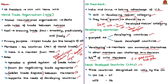The WTO recognizes countries as least developed countries (LDCs) which have been designated as such by the United Nations. There are currently 47 least developed countries on the UN list, and 36 of them have become WTO members. Eight more LDCs are negotiating to join the WTO — Bhutan, Comoros, Ethiopia, São Tomé and Príncipe, Somalia, South Sudan, Sudan, and Timor-Leste.